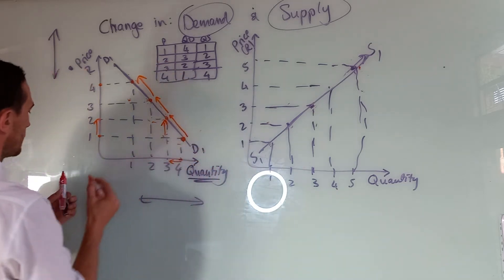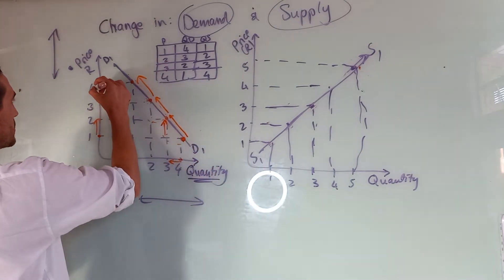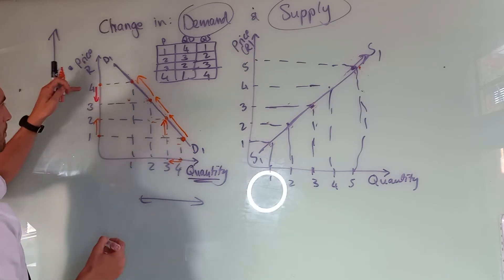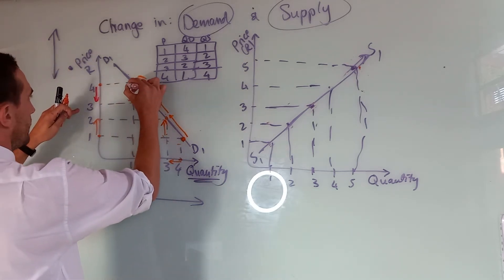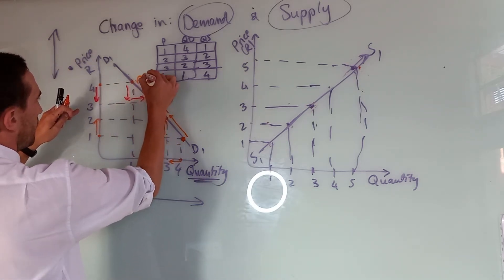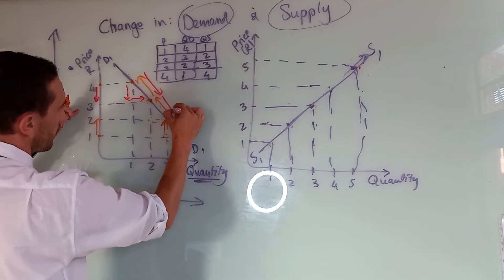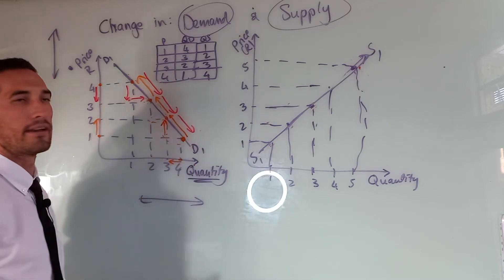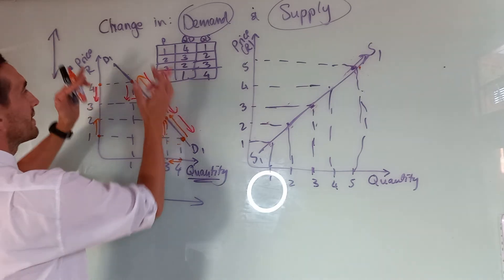And the opposite is quite true. If I reduce my price from four rand to three rand, I get another shift. There's a shift on the demand line. So this is change in quantity demanded.